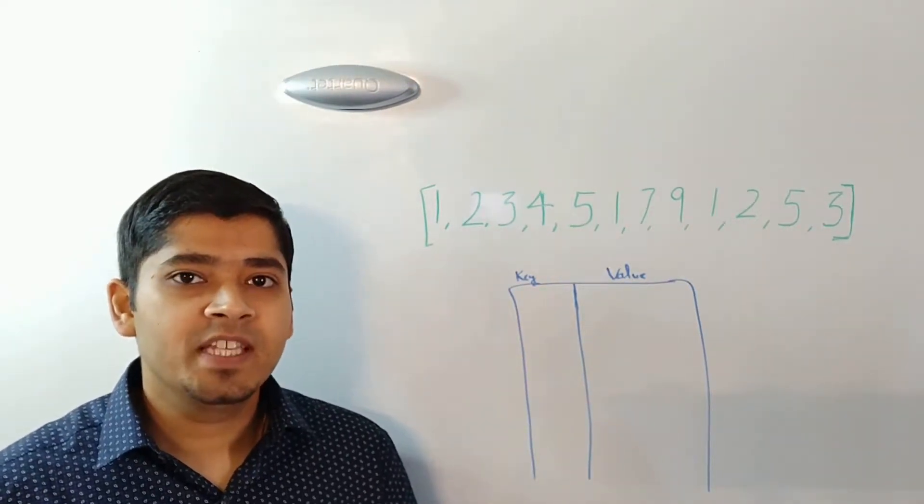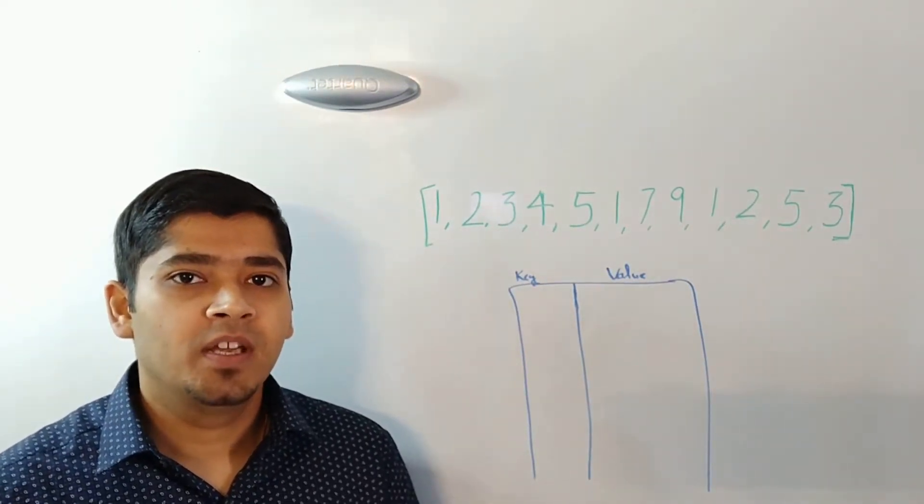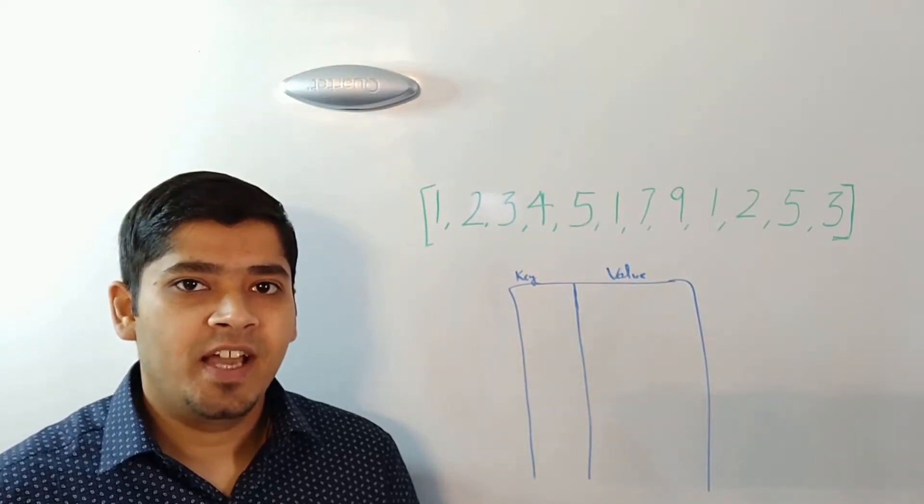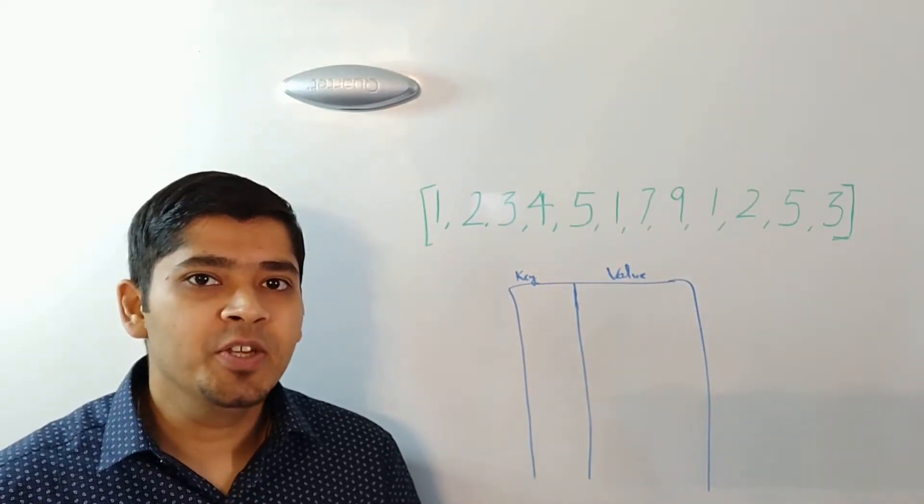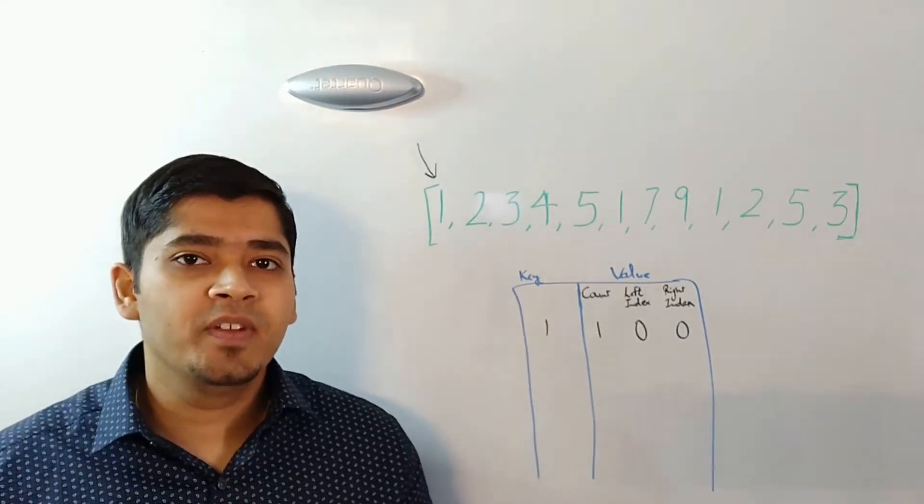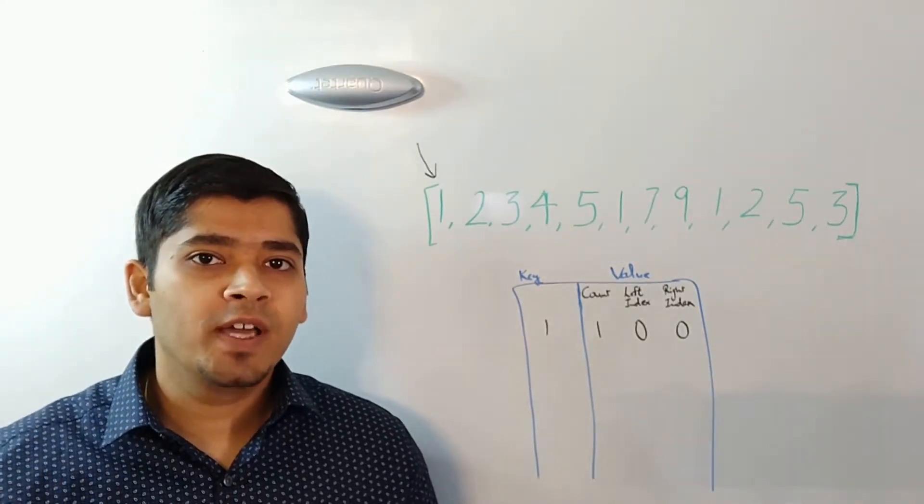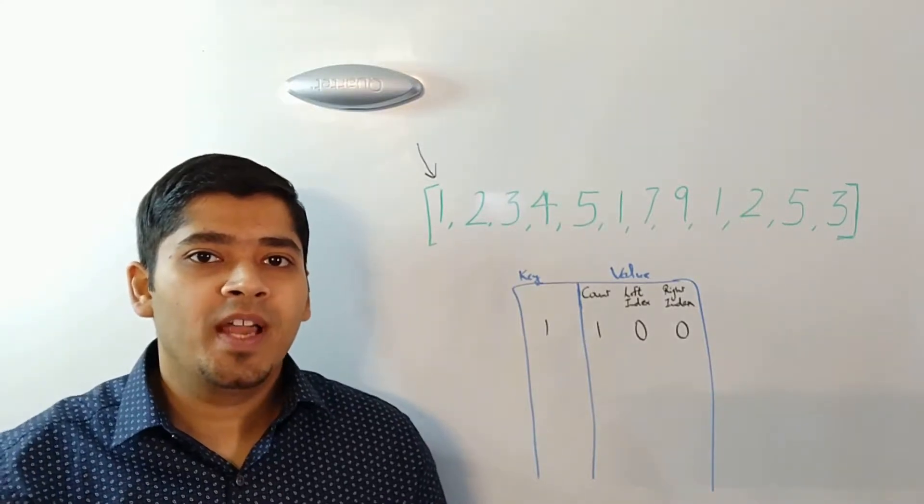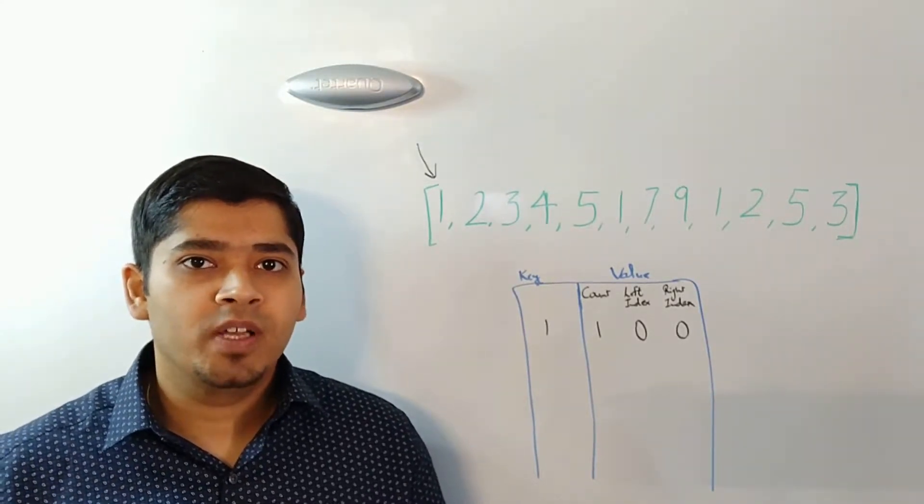So for example we see the first element that is 1. 1 does not exist in the hash table. So we add a new entry into the hash table. This is how the entry will look like. We have the count of 1, the left index is 0 and the right index is also 0 for key 1.